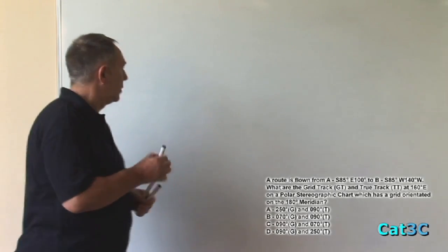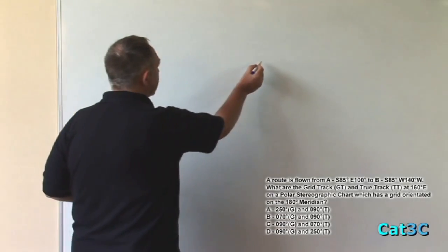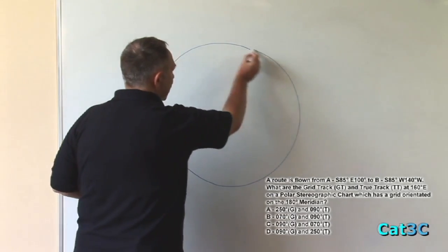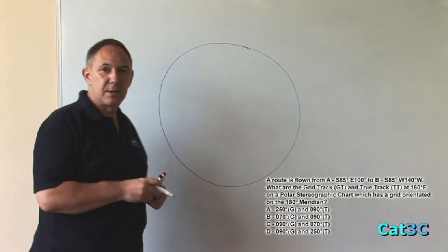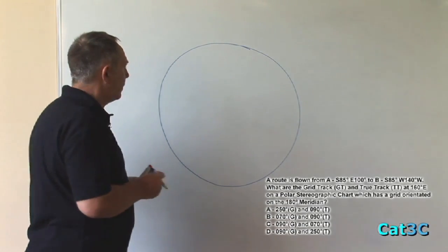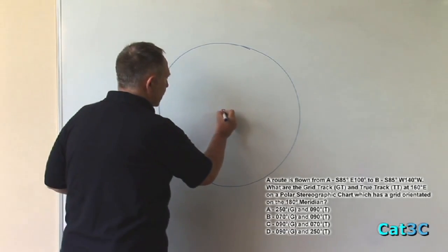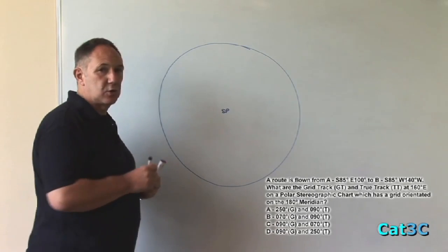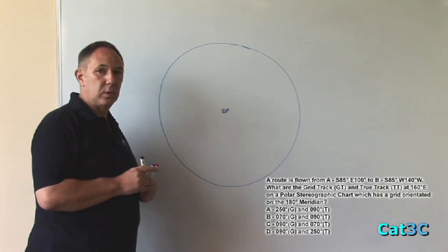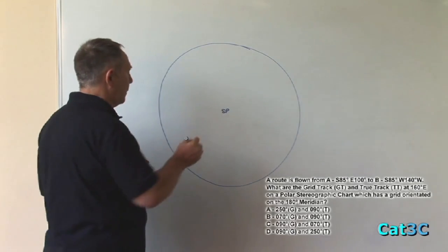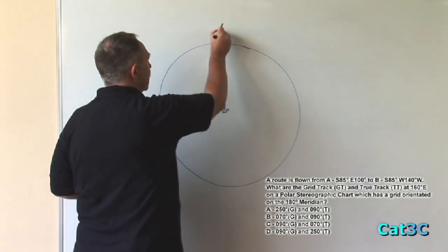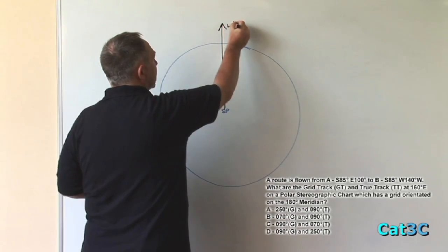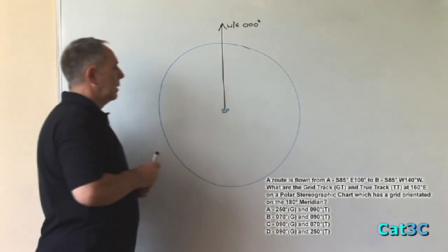Okay, the best way of answering these questions is with a simple diagram and as with all polar stereographic problems, we start with a circle. That circle represents the 85 degree south latitude. In the center we have the south pole and the Greenwich meridian as always is drawn up the page, remembering that north is pointing away from the south pole.